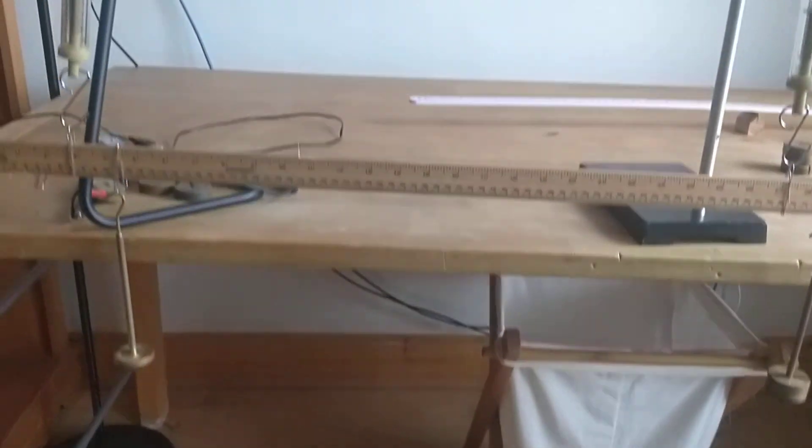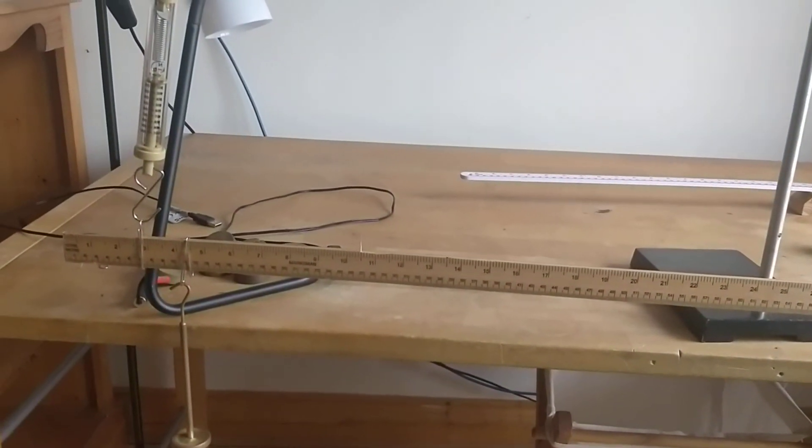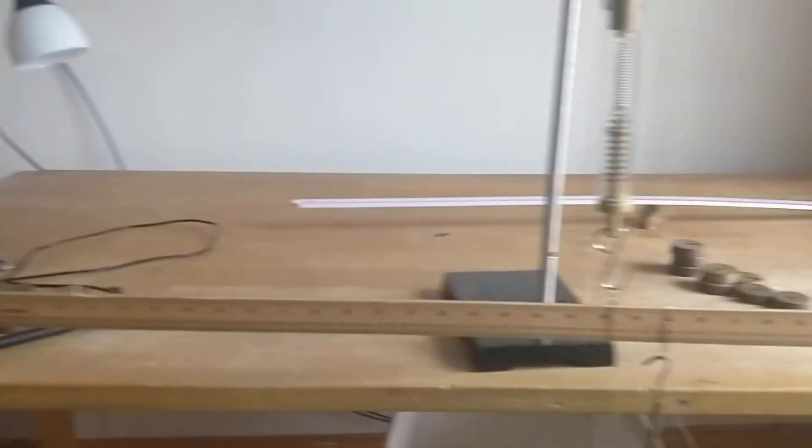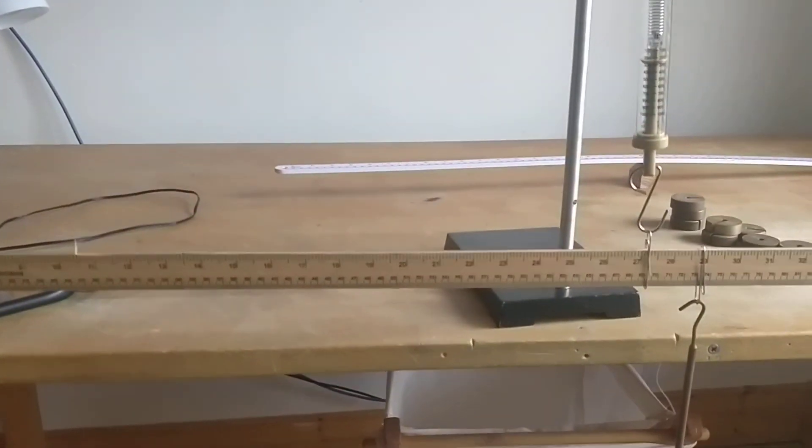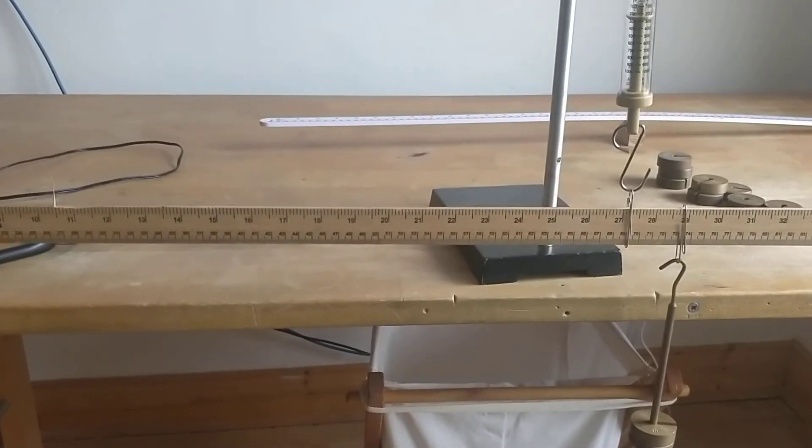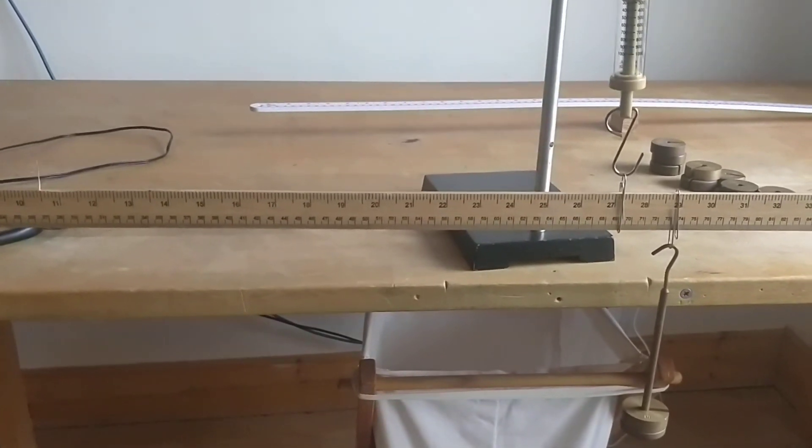So you will take the readings of the position and the weights or the forces up or down at each position. And you're not going to forget the weight of the meter stick, which will be from its center of gravity in the middle. But we'll look at all that in the next clip on the board.